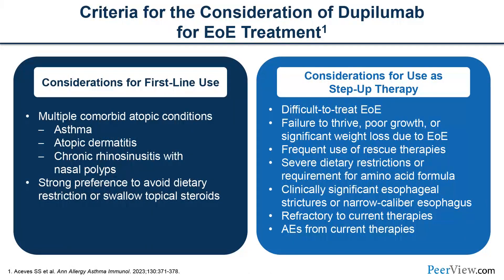The criteria for consideration of dupilumab for the treatment of eosinophilic esophagitis are as follows. It is considered for first-line use if the patient has multiple comorbid atopic conditions — asthma, atopic dermatitis, food allergy, or chronic rhinosinusitis with nasal polyps — or if there is a strong preference to avoid dietary restriction or swallowed topical corticosteroids. It is considered for step-up therapy if they have difficult-to-treat EOE, failure to thrive, significant weight loss due to EOE, frequent need for rescue therapies, severe dietary restrictions or requirement for an amino acid-based formula, clinically significant esophageal stricture or narrow caliber esophagus, if they are refractory to current therapies, or if they have adverse events from current therapies.